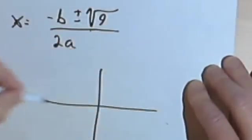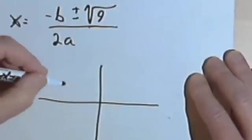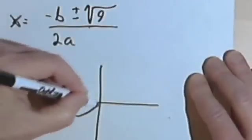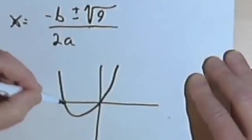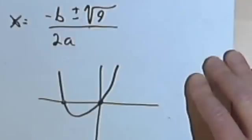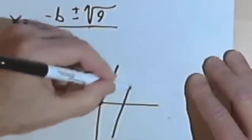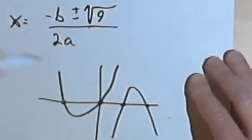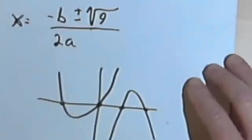So if there are two answers, then it's going to mean that if I have to draw a picture, draw a graph, the graph is going to go through the horizontal axis in two places. The graph could open upwards, it could open downwards, it's not going to matter as long as it goes through in two places.